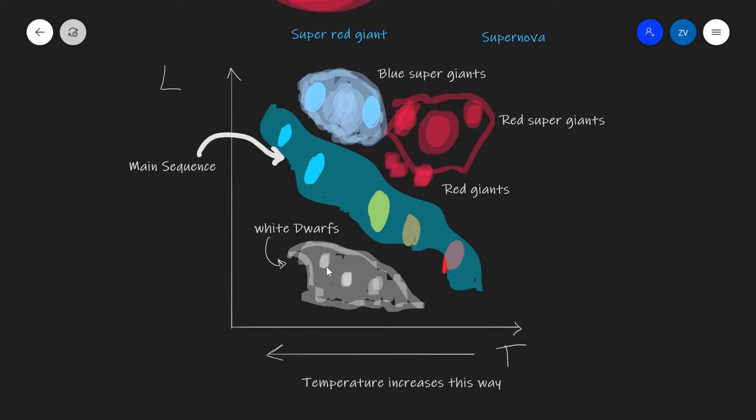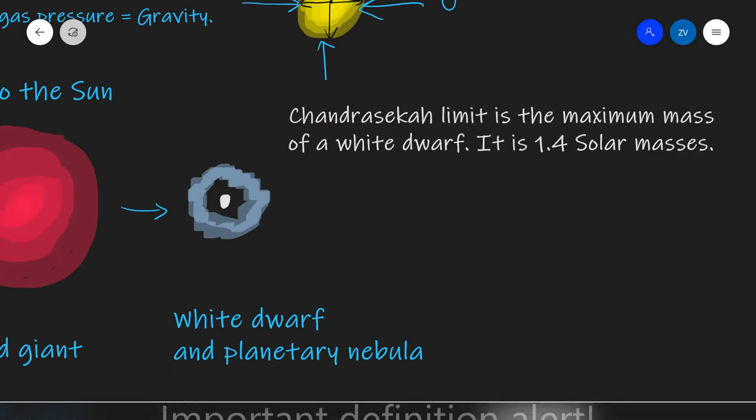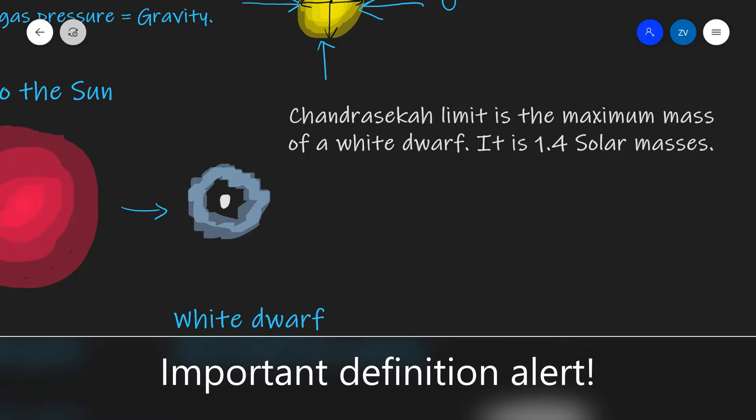What actually determines whether a star is going to turn into a white dwarf or not? Let's revise the Chandrasekhar limit — this is a really important definition. The Chandrasekhar limit is the maximum mass of a white dwarf star, and that is 1.4 solar masses. If the Chandrasekhar limit is exceeded we'll get different objects, for instance a neutron star.